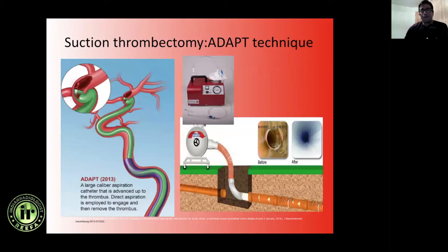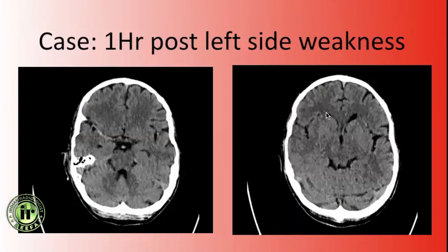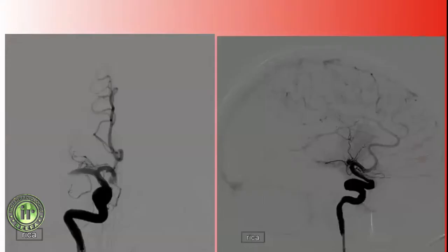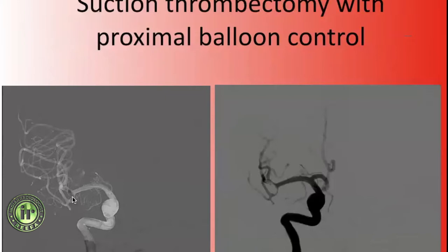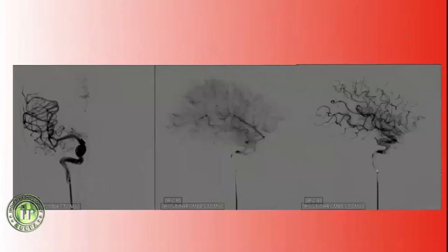If you are a believer of aspiration techniques, what you need is a catheter that goes up to the thrombus and then you aspirate - with or without proximal control - using your hand, a syringe, or a pump, and then remove the clot. Here is a patient with a right MCA occlusion. The angiogram shows a right M1 occlusion with aspiration catheter at the thrombus and recanalization of the MCA.